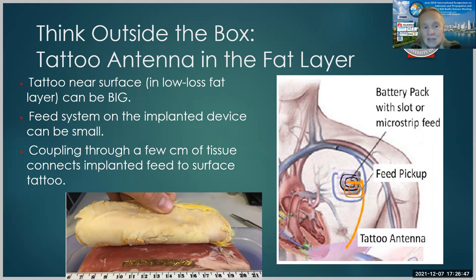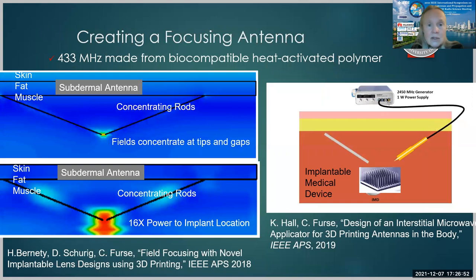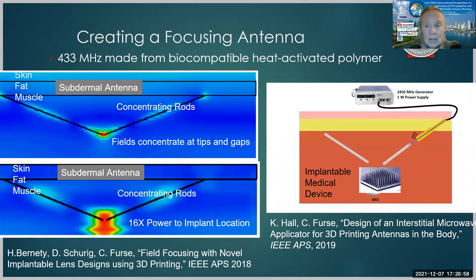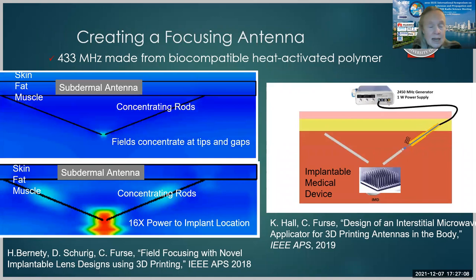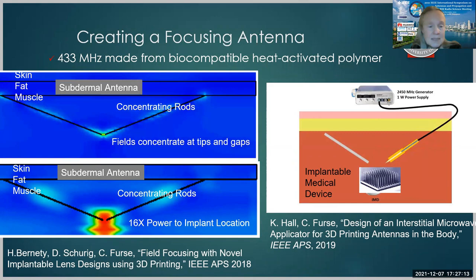Another possibility is to use concentrating rods or loops to be able to use either a plane wave or this subdermal antenna and be able to collect the fields from a large region and concentrate them down on the very small device that could be implanted in the body. So here's an example of concentrating rods, and you know that fields concentrate at tips and gaps of metallic objects.